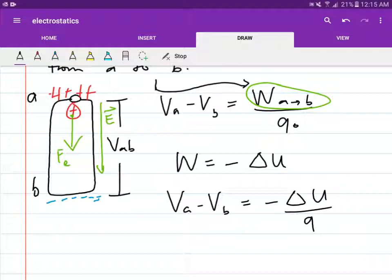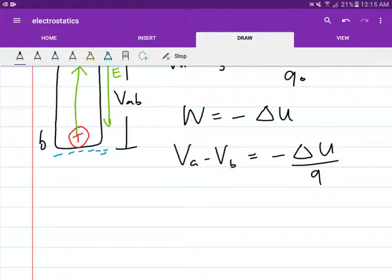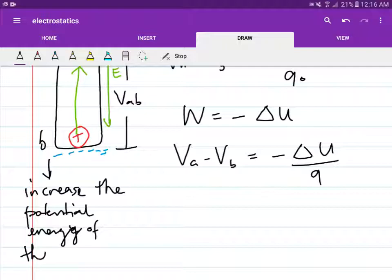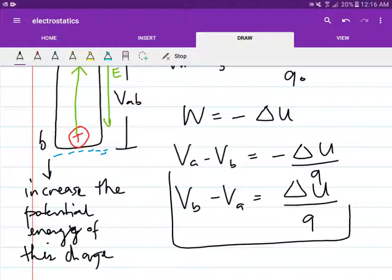But we want it such that this positive charge moves from this direction to this direction, from B to A. In other words, we want to increase the potential energy or the electrical potential energy of this positive charge. It's the same thing as moving from B to A. This will become now positive delta U over Q.